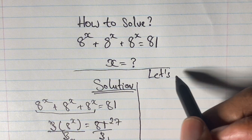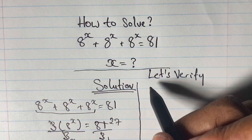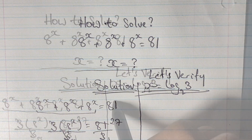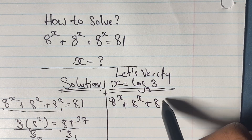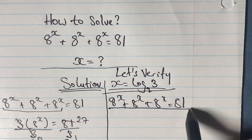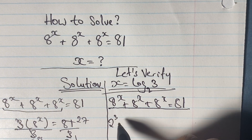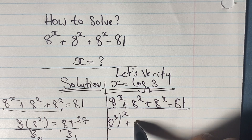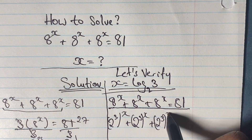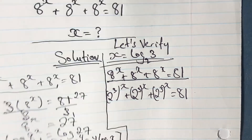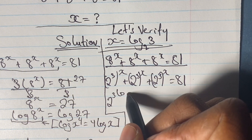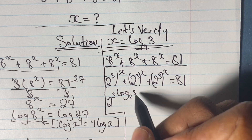Now let us go ahead and verify our solution, where we said that x is equal to log base 2 of 3. We rewrite the original equation: 8 is the same as 2 to the power of 3, so we have 2 to the power of 3 raised to the power of x, equal to 81. Substituting x as log base 2 of 3, we write that out.